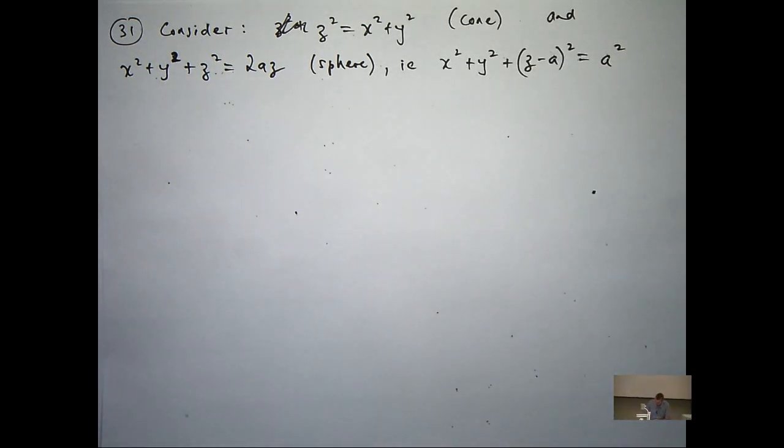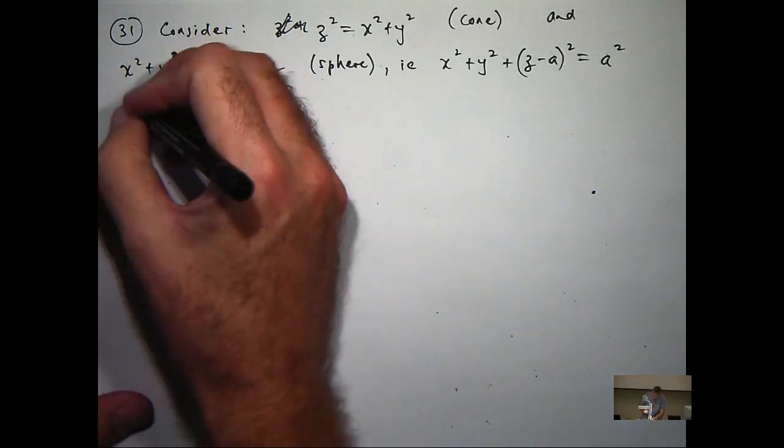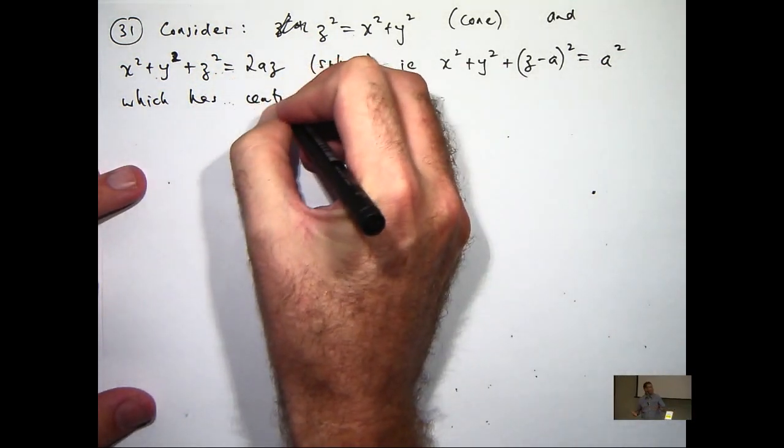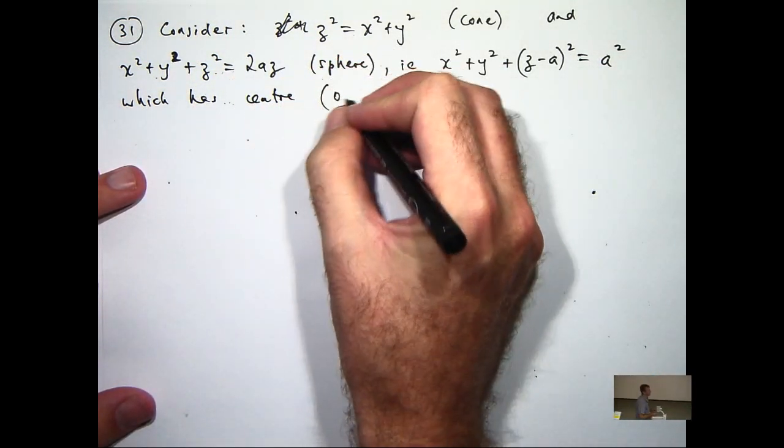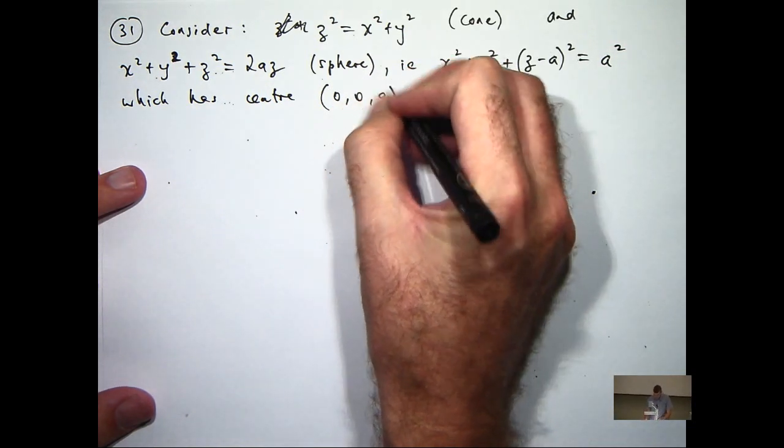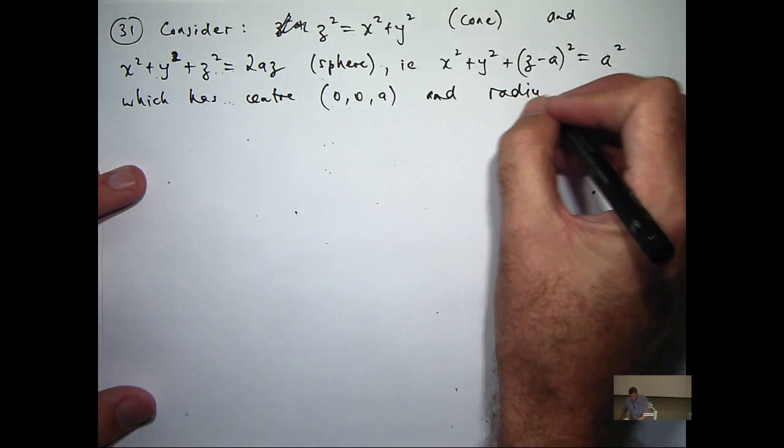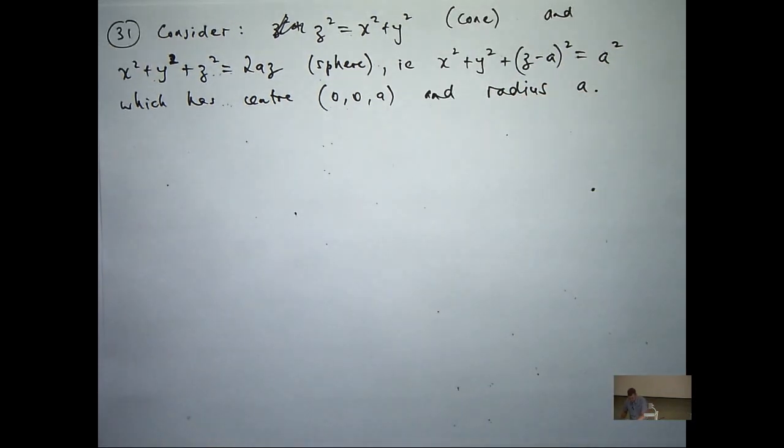These sort of methods can save you a lot of fooling around. So we immediately know now that the center is here and a is just the radius.